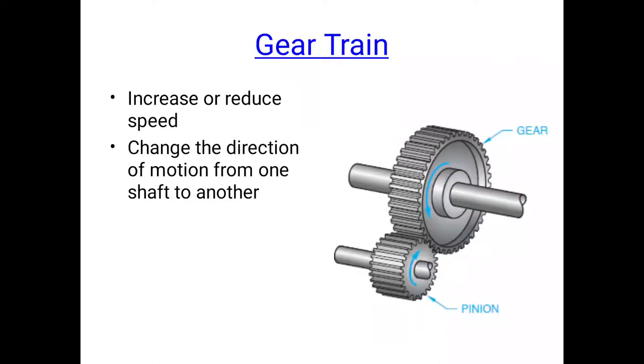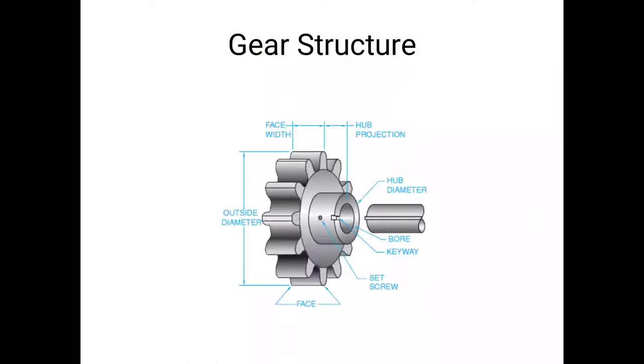Gear train: what is meant by gear train? Gear train increases or reduces speed, changes direction of motion from one shaft to another. Here are two gears: number one is big gear, number two small gear is called pinion. Gear structure: here I show the gear structure diagram. Outside diameter from top to bottom section. Face width is teeth width. Number two is face, third is set screw.